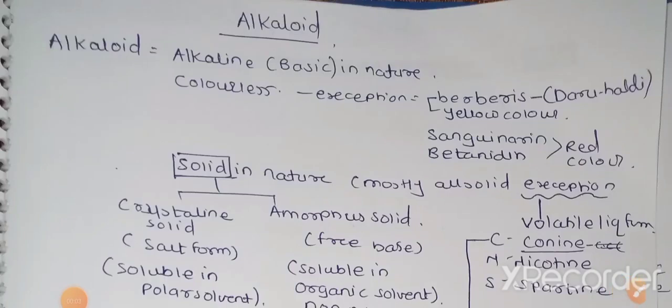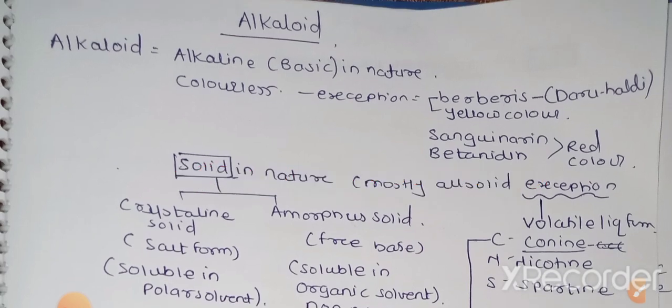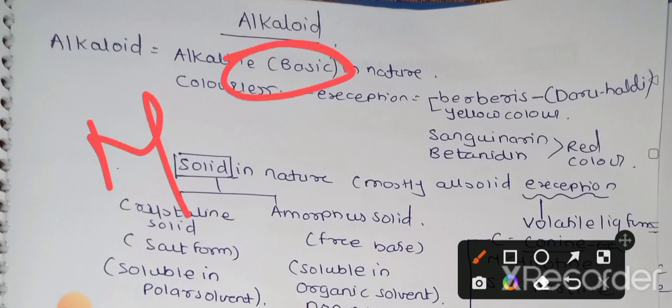Welcome to the channel. In today's video we are going to start the topic alkaloids. Last lecture we completed volatile oil, and in this lecture we will start with alkaloids. So what is alkaloid? We have extracted the word 'alka' from alkaloids, which means alkaline. So alkaloids are mainly basic in nature. They contain nitrogen, and nitrogen has a lone pair, which is why it is basic in nature.